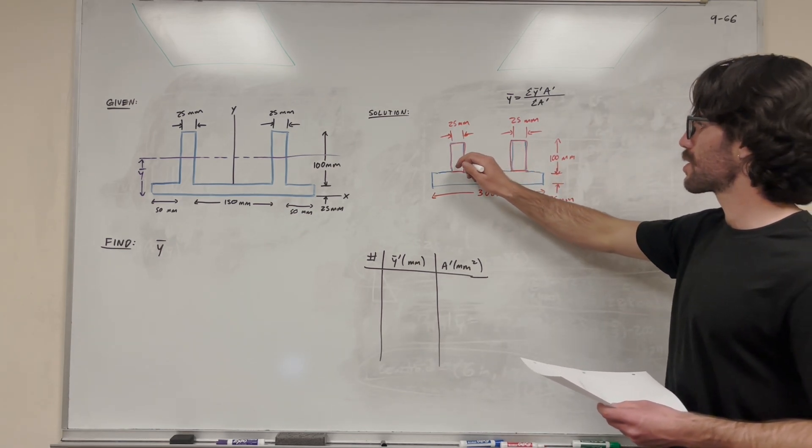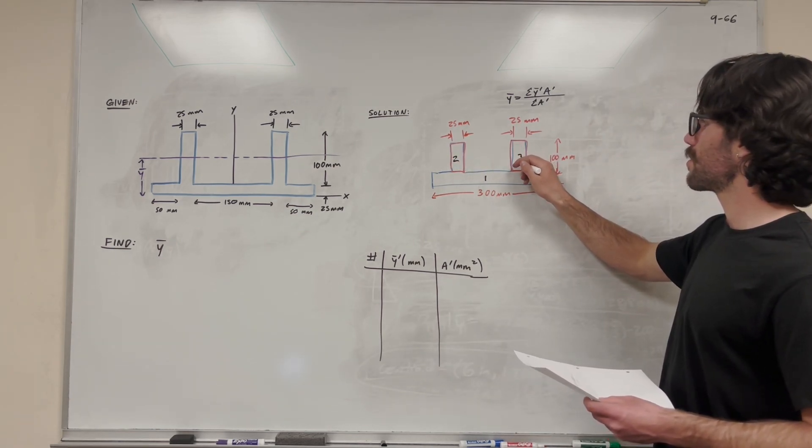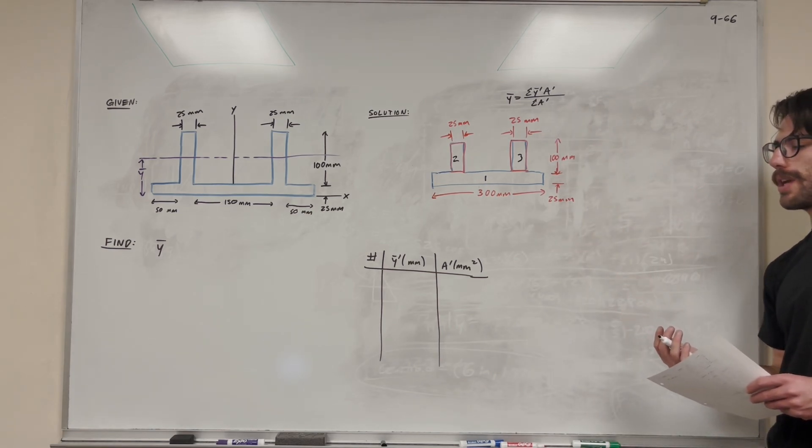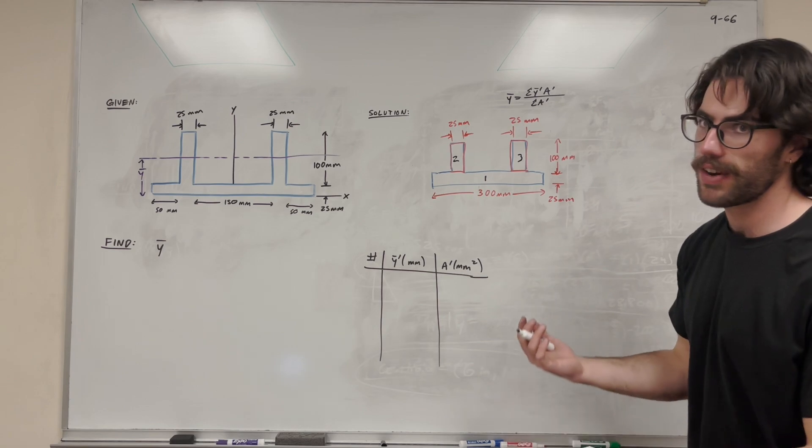And we have these two rectangles, so we're going to call these shapes two and three. So these are three really easy shapes to work with, and by using this equation and breaking it up into shapes, we can combine it all together to find its final y bar.